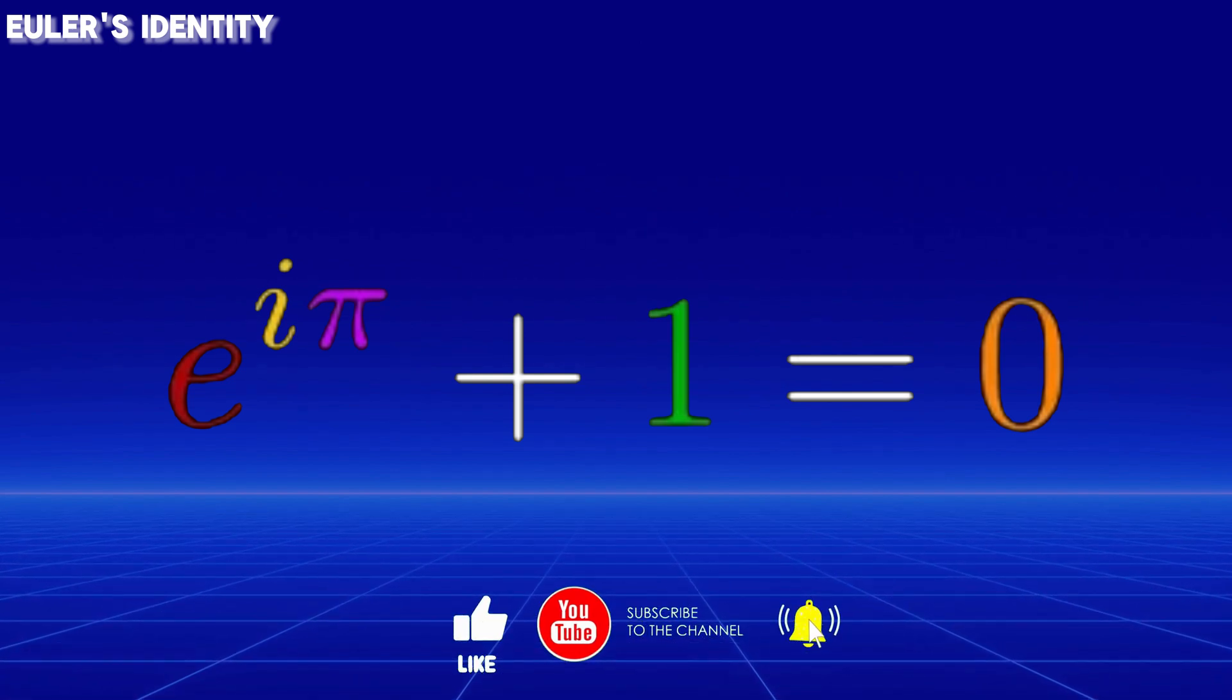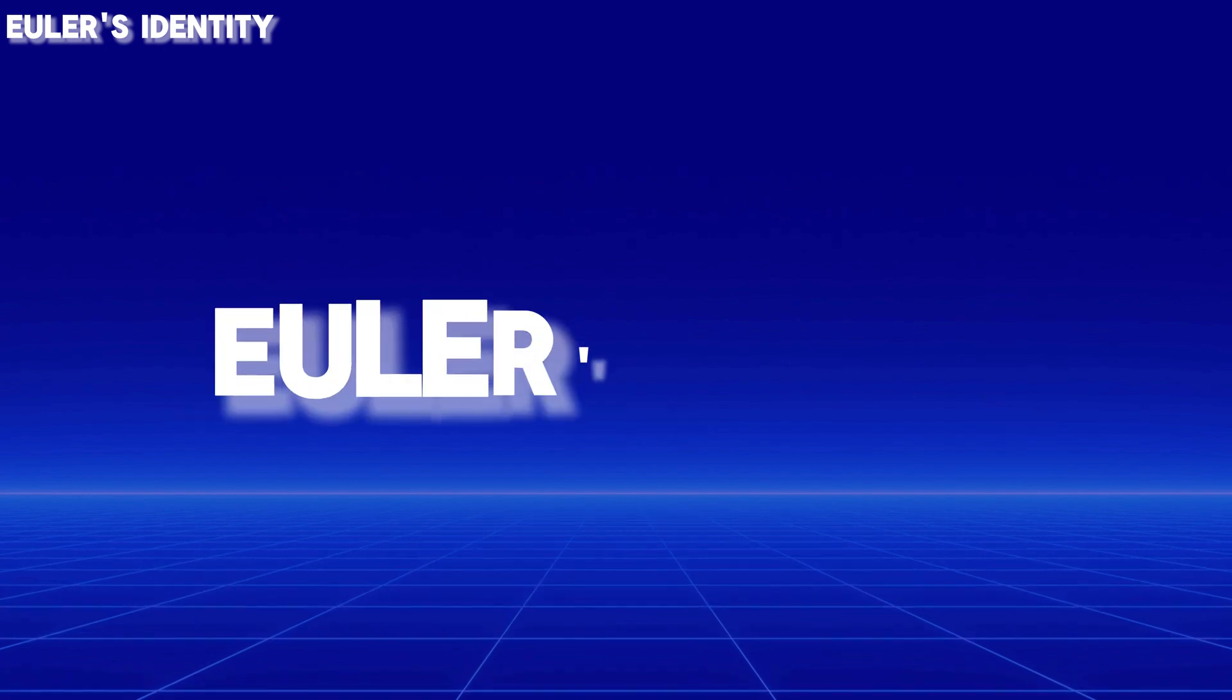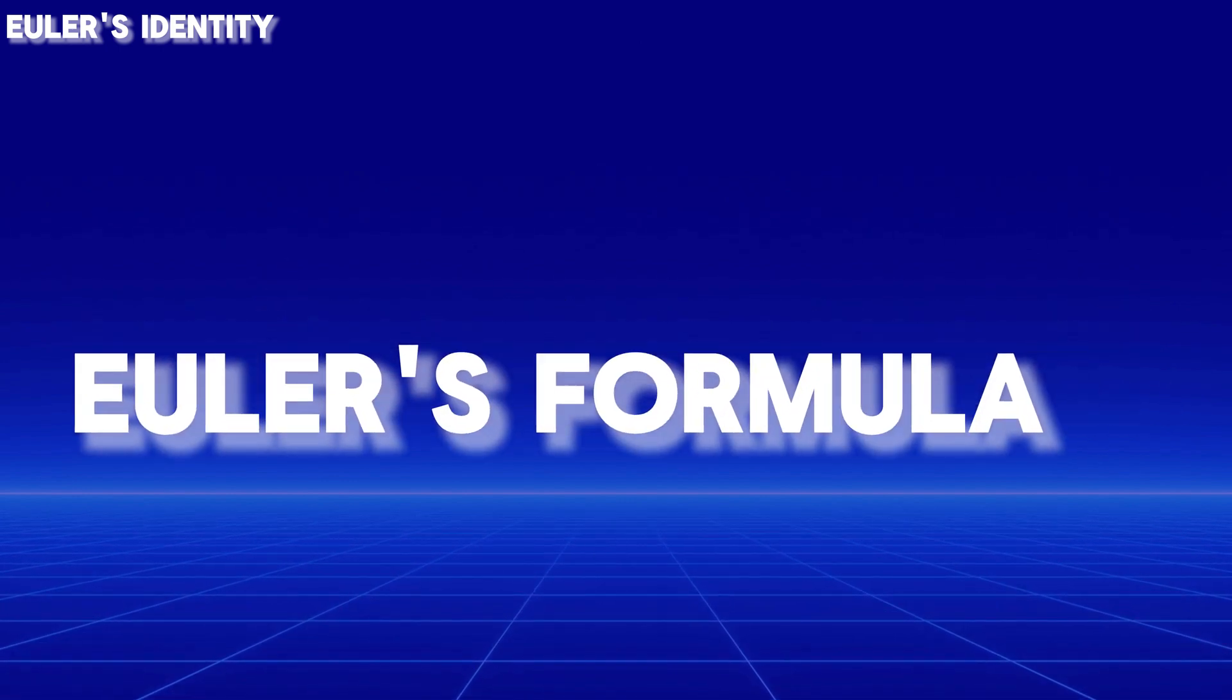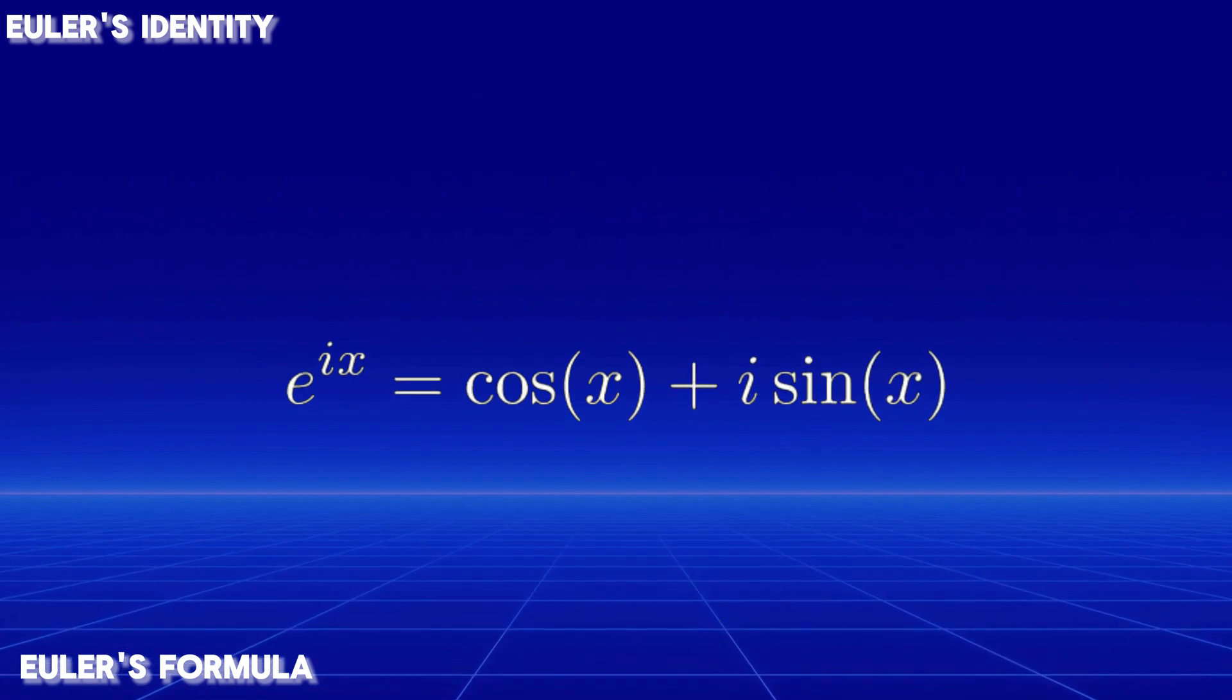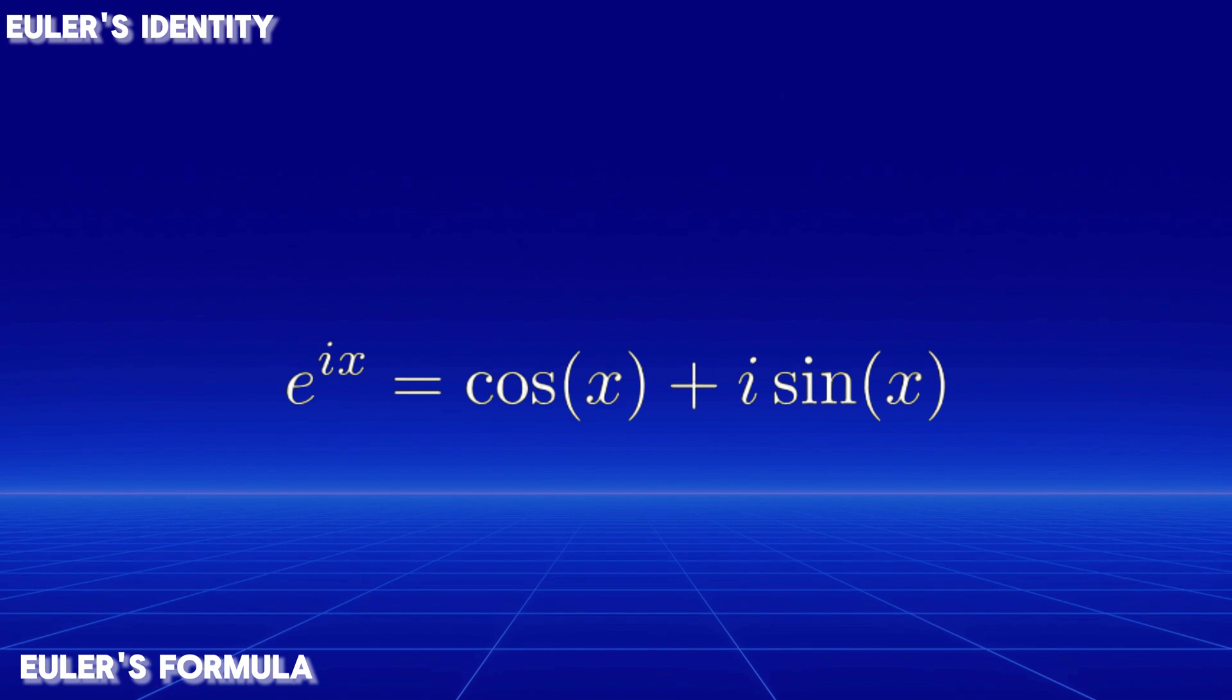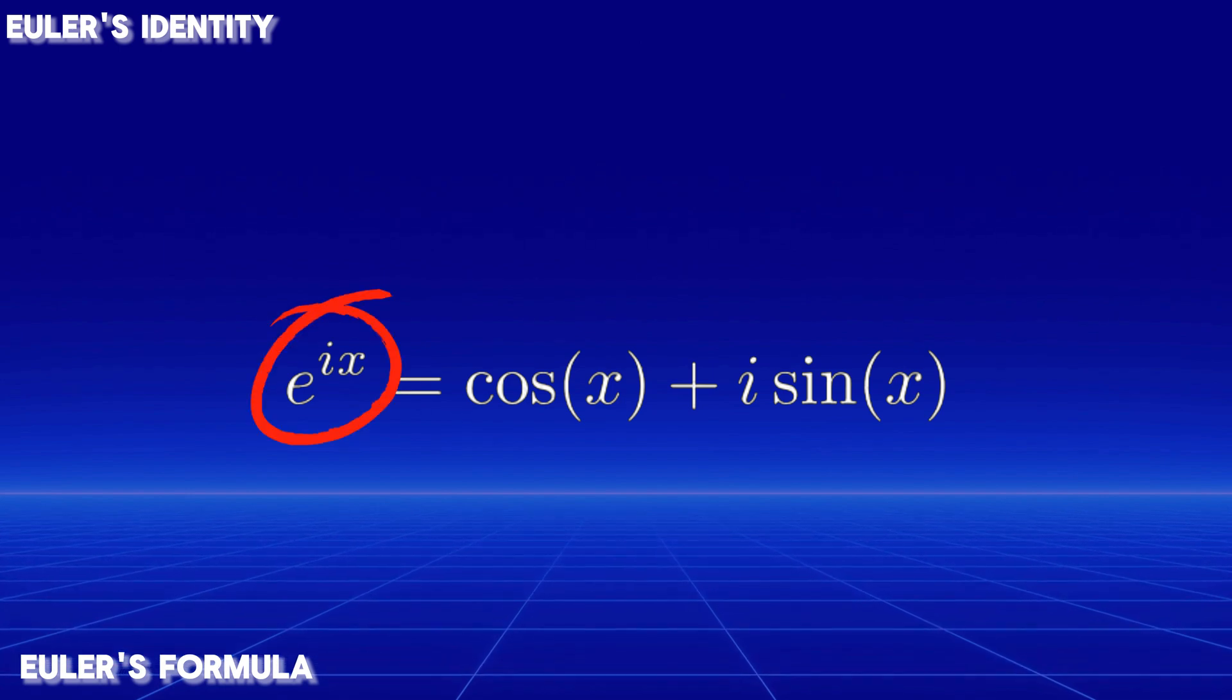The heart of Euler's identity lies in Euler's formula. This equation forms a bridge between exponential functions and trigonometry, revealing unexpected connections between exponential growth and circular motion.